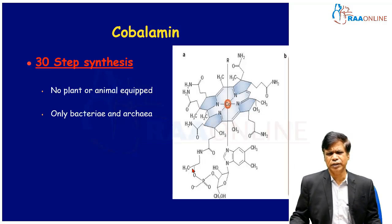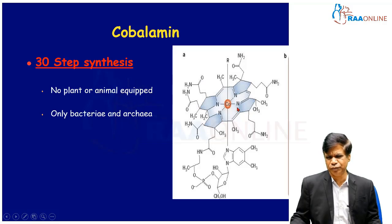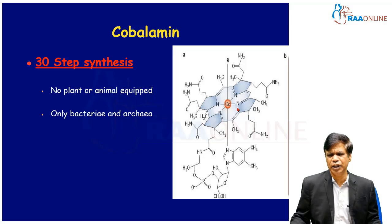It is a very complex cofactor. At least 30 steps are involved in making vitamin B12. No animal or plant is equipped to synthesize vitamin B12 in nature. They can be produced only by bacteria and the archaea. So all other living things need to acquire B12 from the original producers, namely bacteria and the archaea.